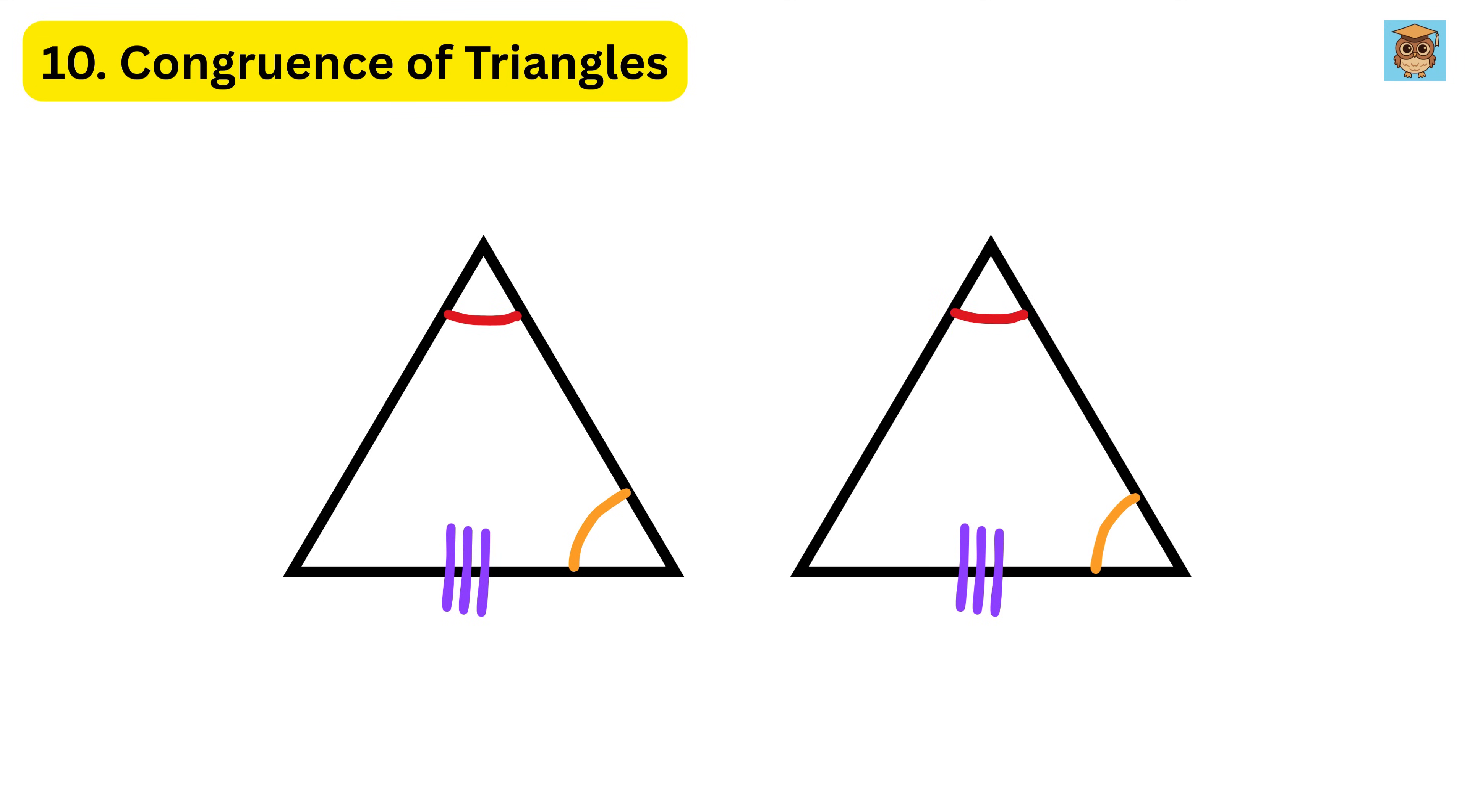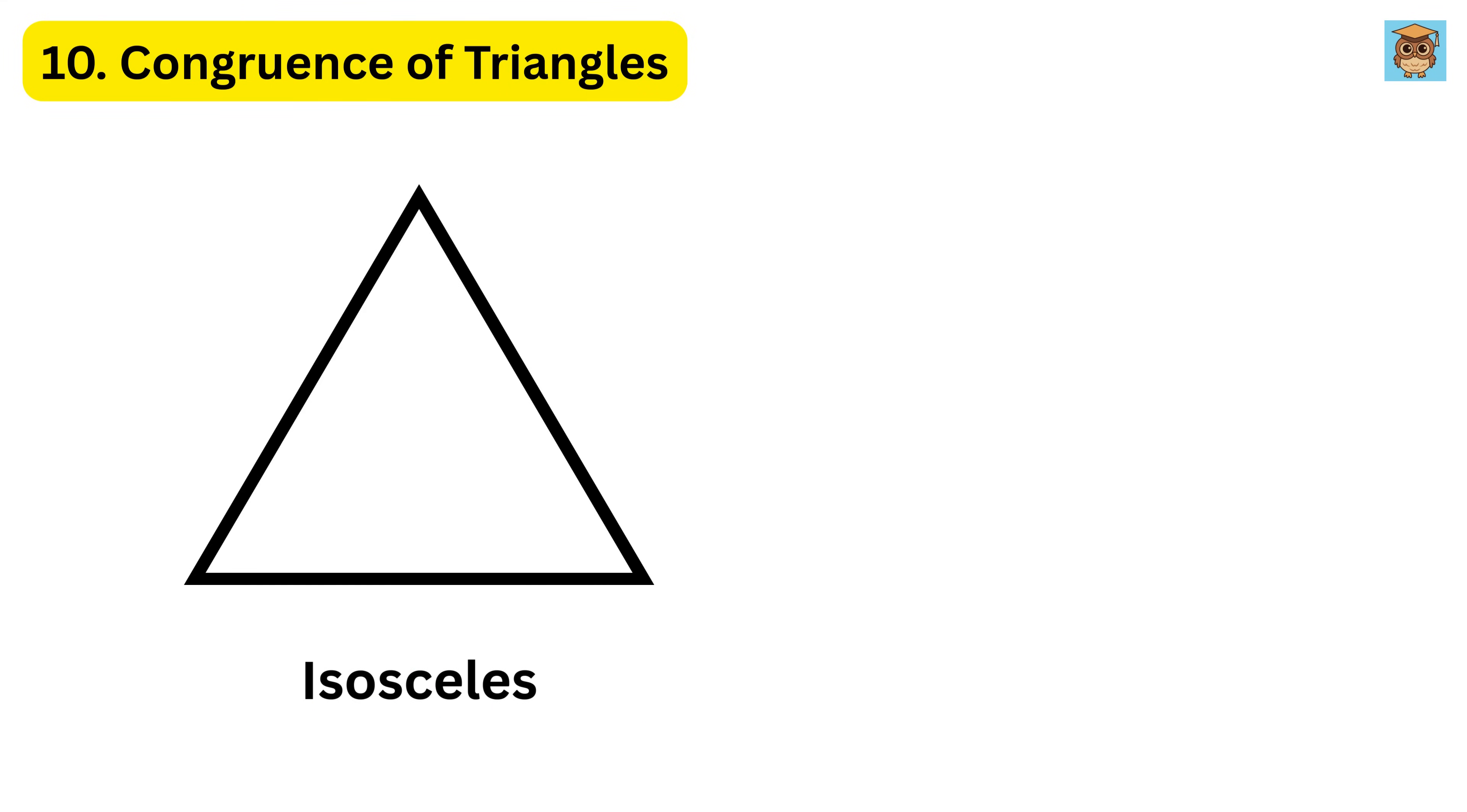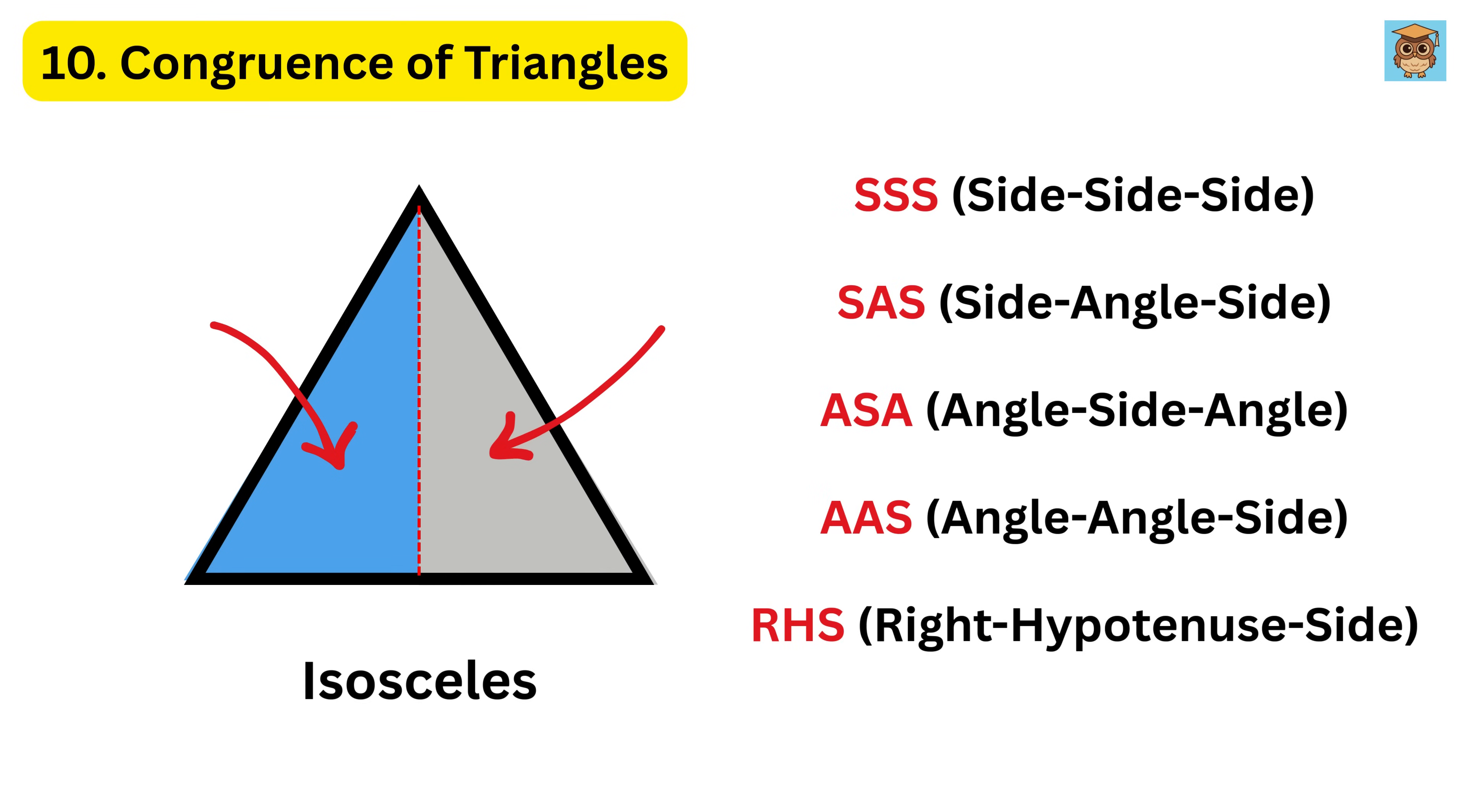If two angles and a side that is not between them are the same, it is called angle-angle-side congruence. And if two right triangles have the same hypotenuse and one leg, it is called right hypotenuse-side congruence. Now, if this is an isosceles triangle, and this is the height of this triangle, then tell me in comments whether both these triangles are congruent or not. Also, let me know which of these rules you have used to prove the same.